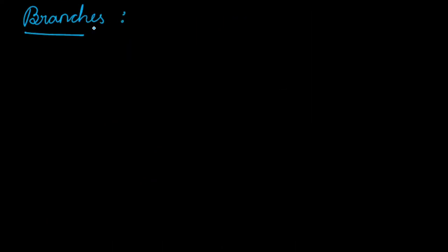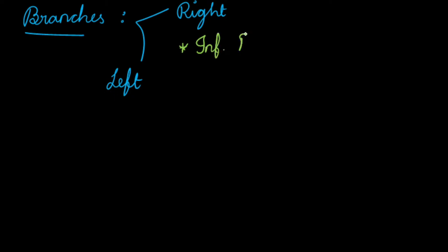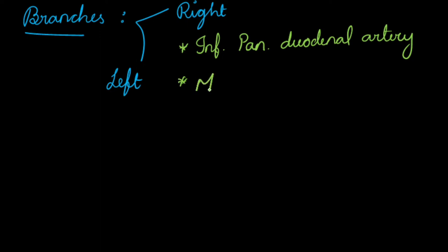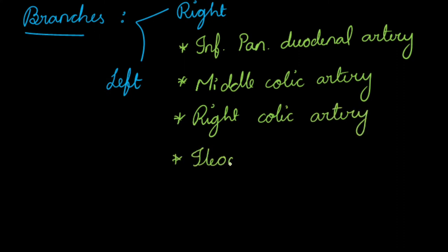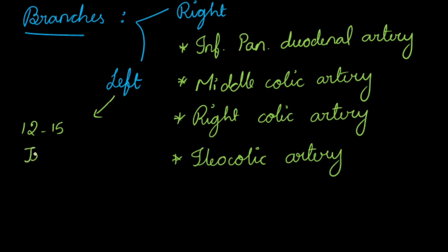Let us discuss the branches of the superior mesenteric artery. It has right side branches and left side branches. The right side branches are: first, the inferior pancreaticoduodenal artery; then the middle colic artery; then the right colic artery; and finally the ileocolic artery — the artery where the superior mesenteric artery finally gets anastomosed in the right iliac fossa. The left side gives around 12 to 15 jejunal and ileal branches.